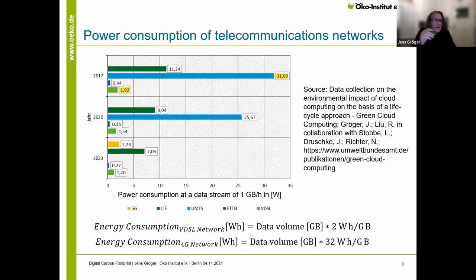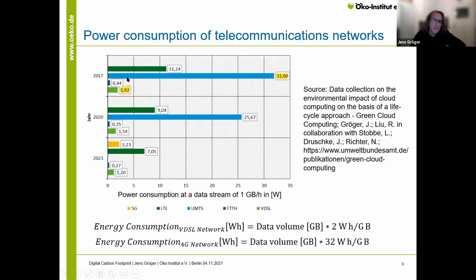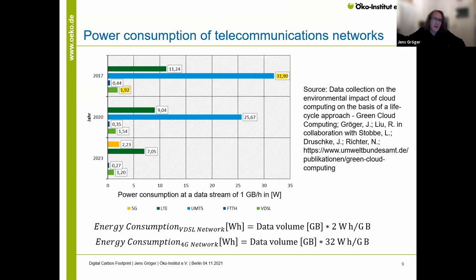We did an assessment in another project where we looked at different types of network equipment. These are the numbers we used for the calculator: for UMTS/4G going to 3G network, you have 32 watt hours if you transfer one gigabyte of data over the course of one hour. The same number applies for the fixed network — VDSL cable network. This gives us the possibility to calculate the energy consumption of these respective networks depending on the data volume. If you transfer data over the networks, you use energy, and it differs depending on whether you use fixed cable networks or mobile phone networks.